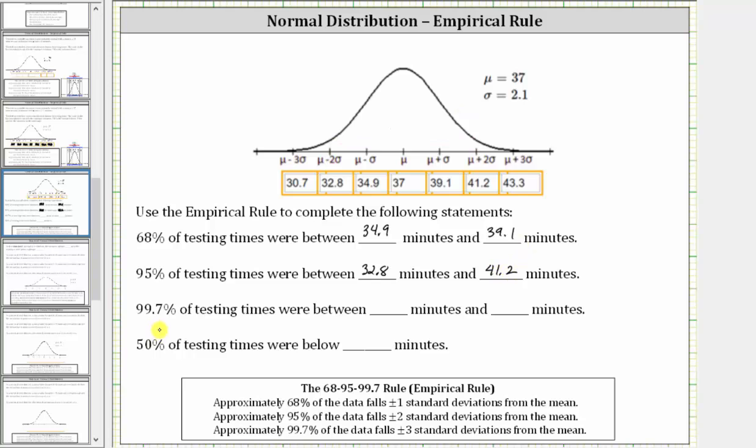For the third statement, 99.7% of the testing times were between what times? The empirical rule states that approximately 99.7% of the data falls plus or minus three standard deviations from the mean, which in our case is from 30.7 to 43.3.